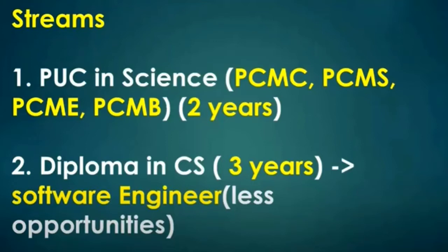The changing subjects are Computer Science, Statistics, Electronics, and Biology. These are different options. Both PUC and Diploma courses are two years and three years respectively. PUC is first year and second year — two years total. Diploma is probably three years.